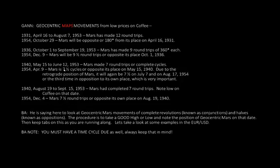1940 May 19 to June 12, 1953: Mars made seven round trips or complete cycles. 1954 April 9: Mars is seven and a half cycles — opposite its place on May 15, 1940. Due to the retrograde position of Mars, it will again be seven and a half on July 7th, and on August 17, 1954 — the third time in opposition to its own place, which is very important. 1940 August 19 to September 15, 1953: Mars had completed seven round trips — note the low on coffee on that date. 1954 December 4: Mars at seven and a half round trips, opposite its own place on August 19, 1940.